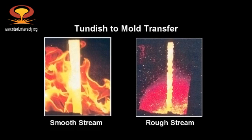During a ladle change operation, conditions in the tundish can be calm and quiescent and we obtain a smooth stream exiting the tundish. On the other hand, when the ladle stream is on and conditions in the tundish are turbulent, then turbulent streams can be obtained entering the casting mold. With a smooth stream, fluid flow goes deep down the center of the mold and back up the walls. With a rough stream, conditions are reversed — there is fluid flow movement up the center and down the walls. This all affects the location of inclusions in the final product, so stream control and protection between the tundish and the mold is very important.